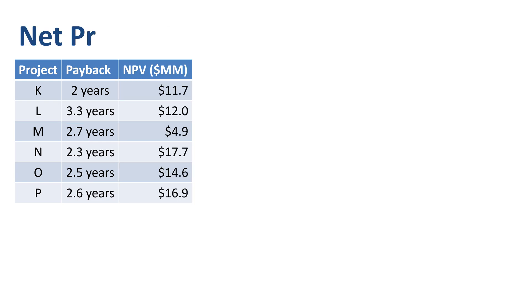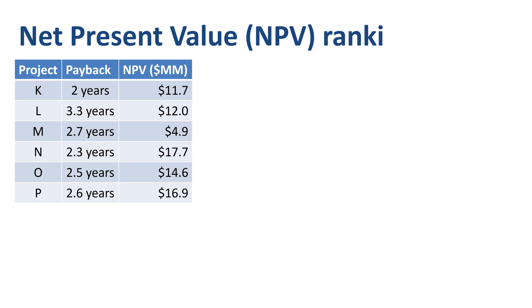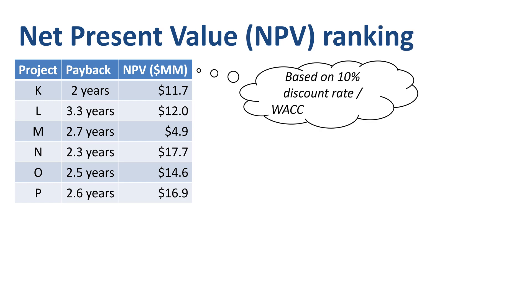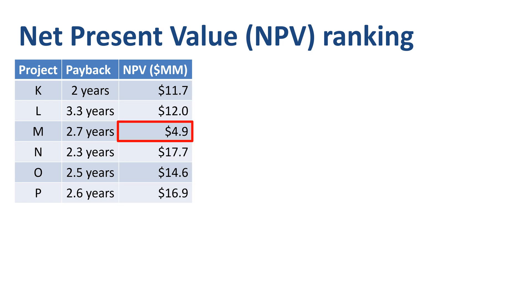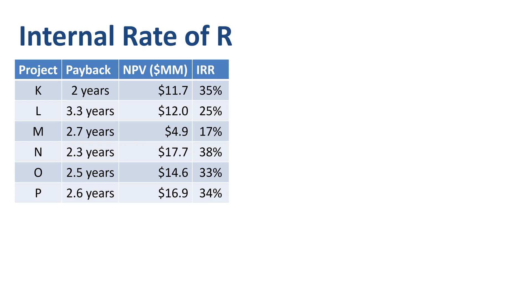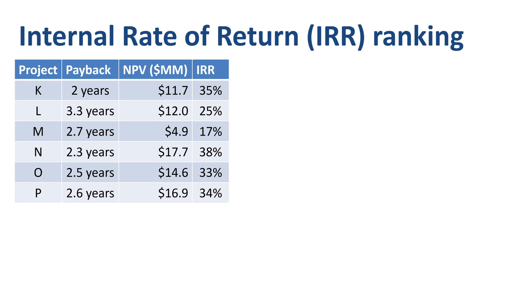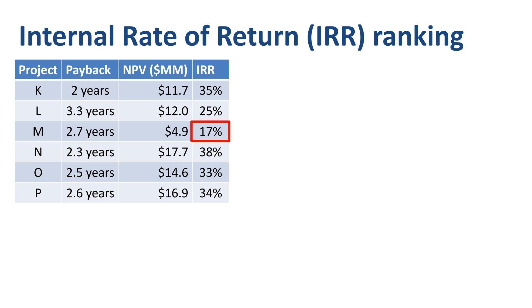If you rank the projects based on the net present value method, which takes the time value of money into account, then you start with the project that creates the highest amount of value, which is the most attractive, and end with the project that creates the lowest amount of value, which is the least attractive. If you rank the projects based on internal rate of return, then you start with the project that promises the highest percentage return, which is the most attractive, and end with the project that promises the lowest percentage return, which is the least attractive.